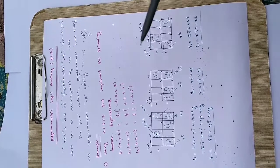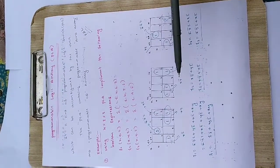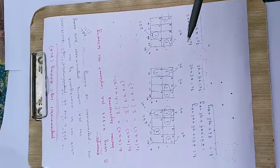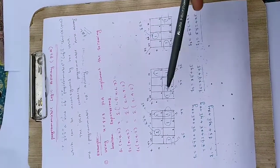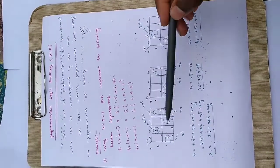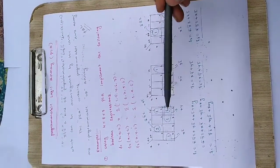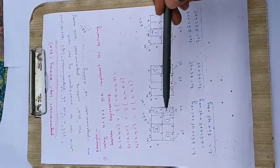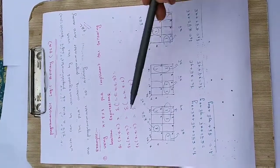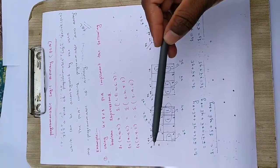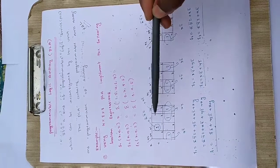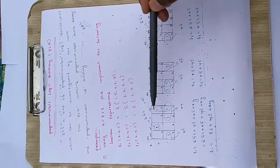First we will try to convert these min terms into the variables X, Y, Z so that it will be easy to implement. We will take 3 K-maps here. Since there are 3 variables, each K-map will have 8 boxes. Following grey code rules, the XY columns are arranged as 00, 01, 11, 10 and Z rows as 0 and 1.